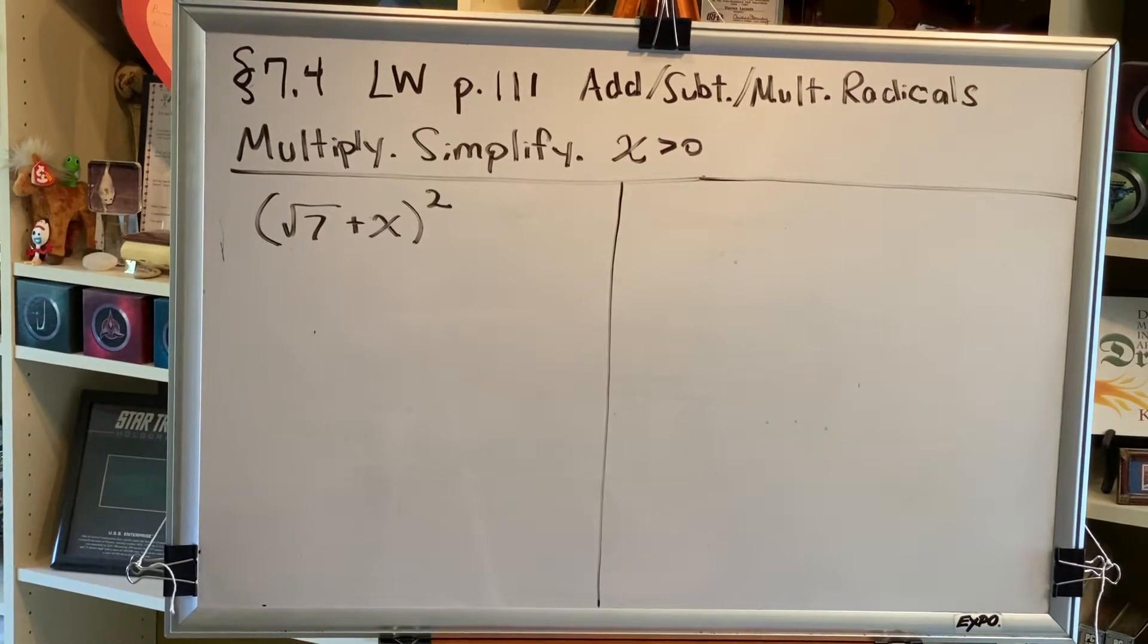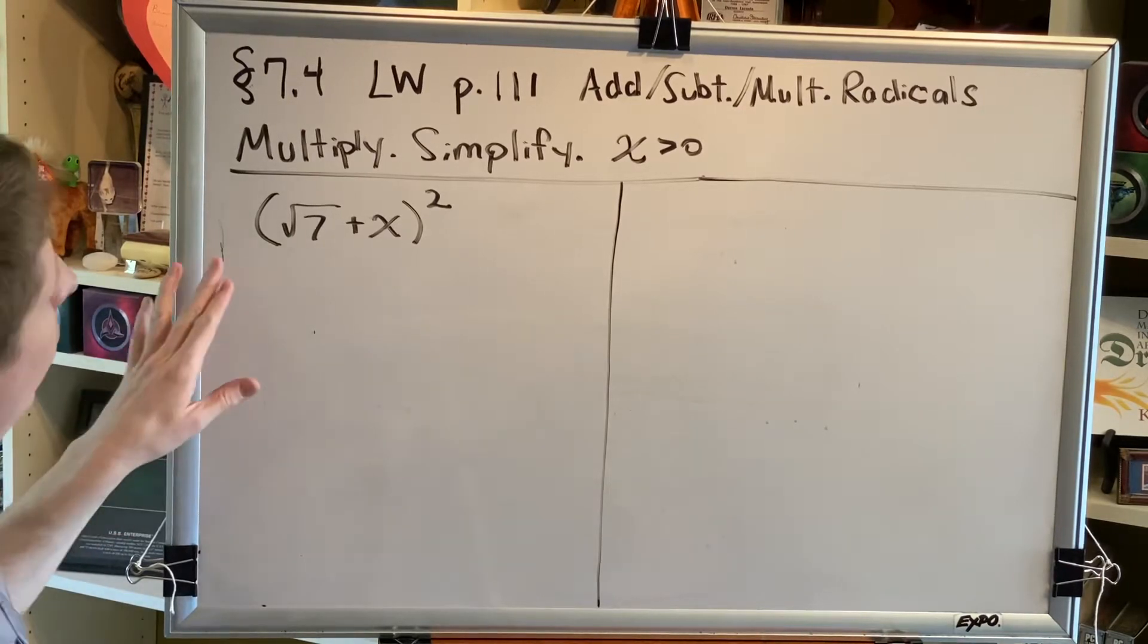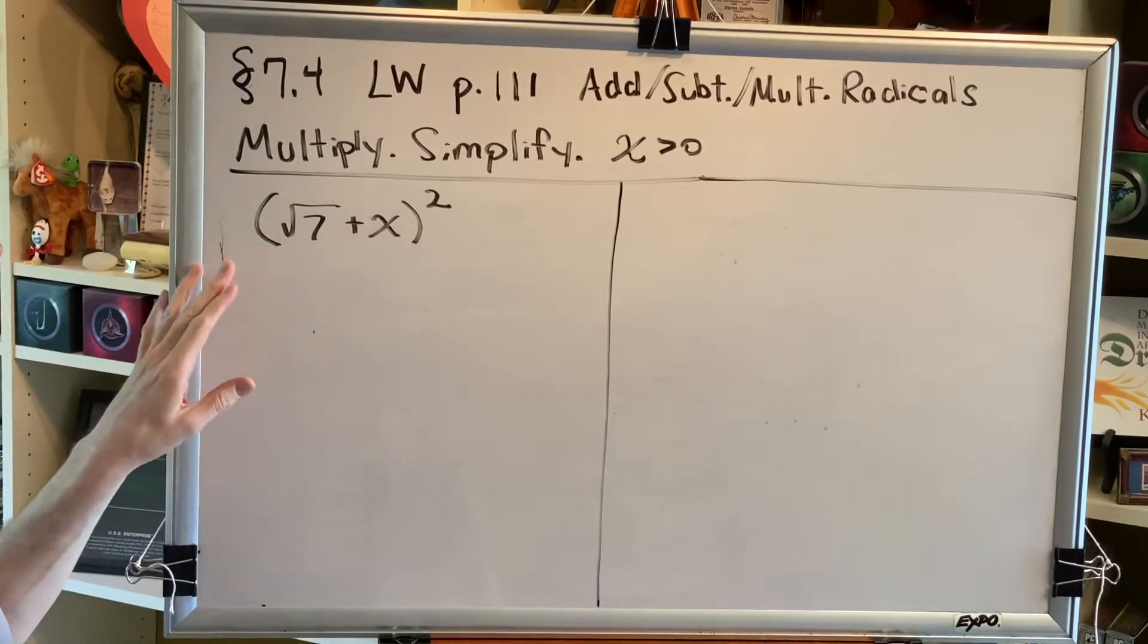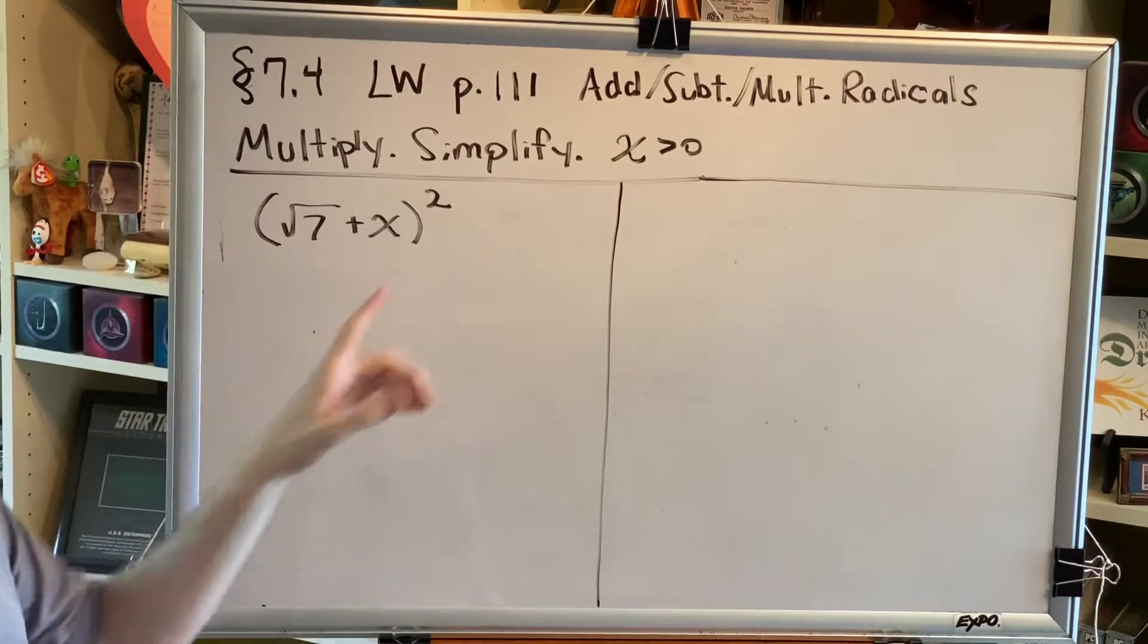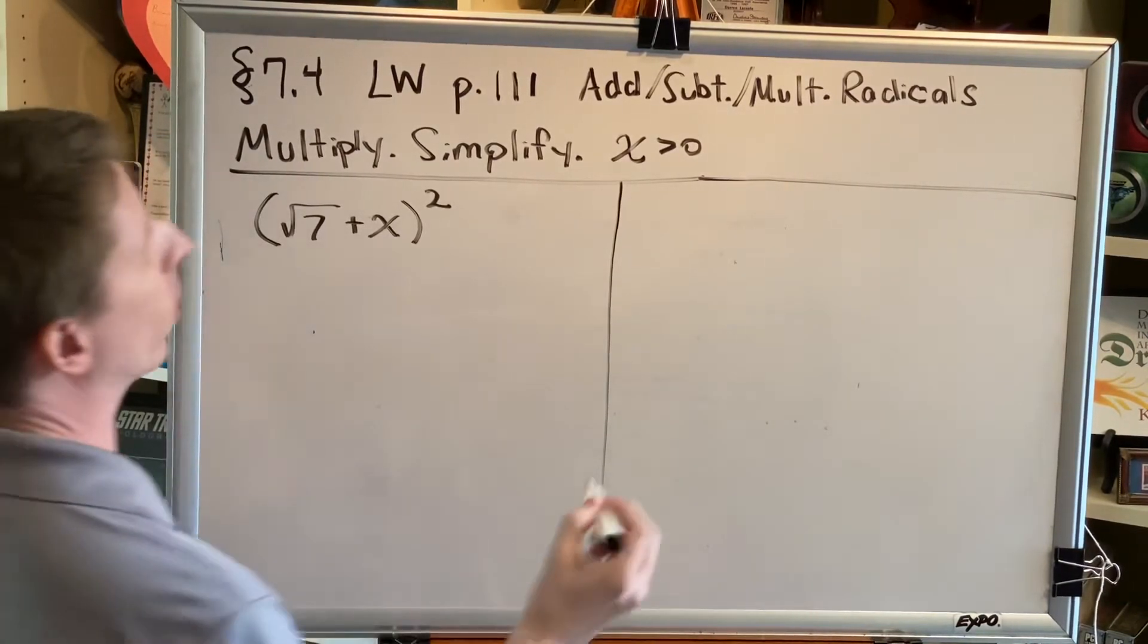We continue learning workbook page 111 with some examples. We're going to do two problems. They both have the same instructions: Multiply, simplify, assume that x is positive and real.